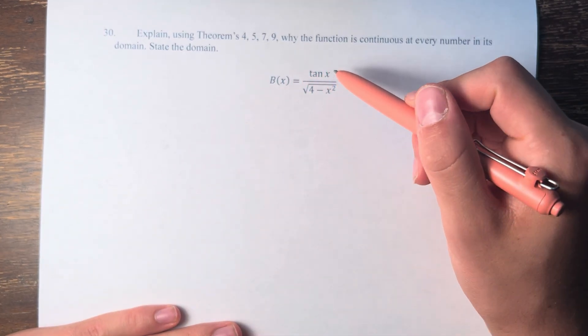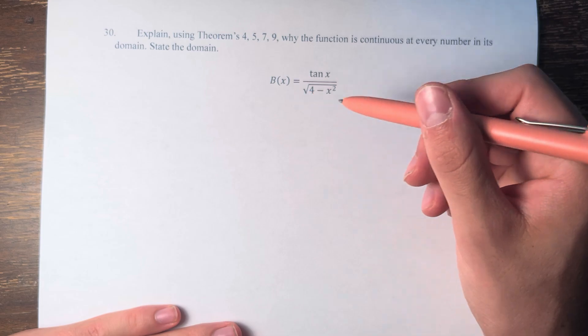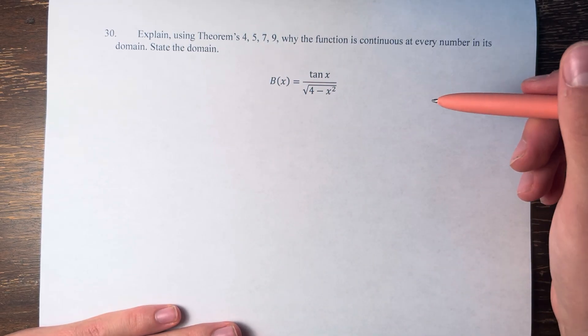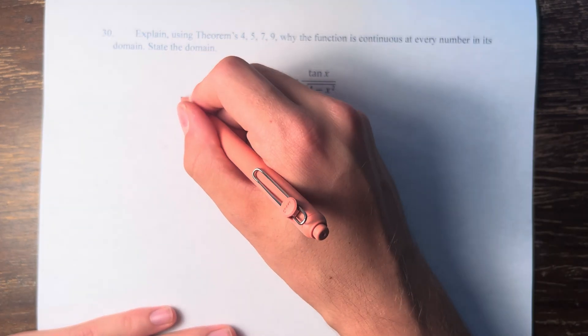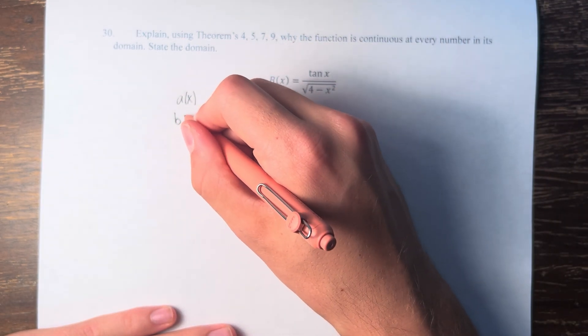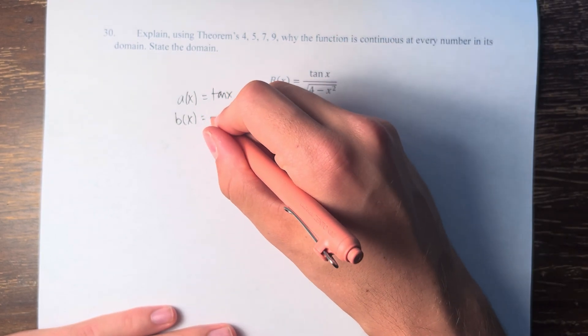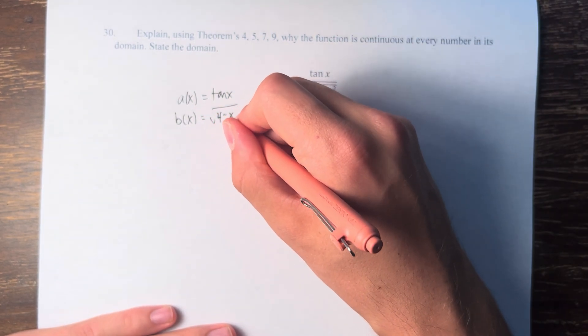So here we have B(x) is equal to tangent of x over the square root of 4 minus x squared. And we're going to write this as the combination of two different functions: a(x) and lowercase b(x). a(x) is equal to tangent of x, and b(x) is equal to 4 minus x squared.